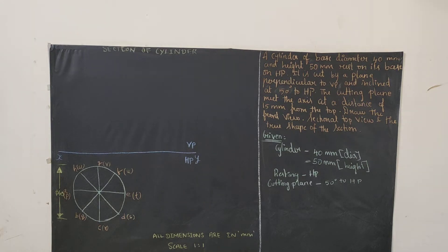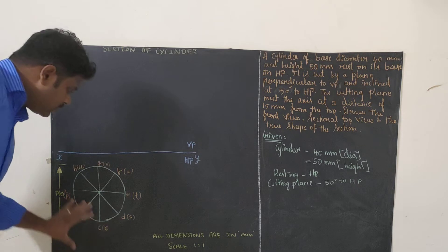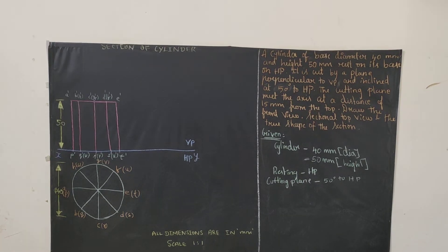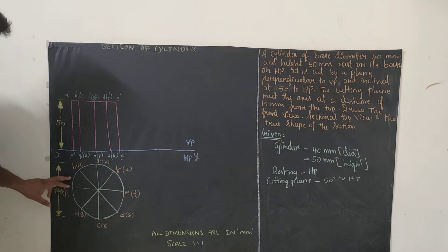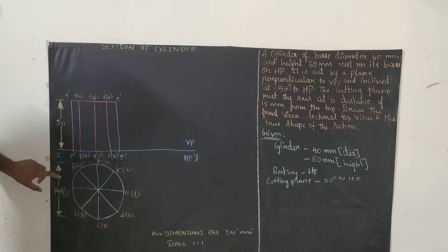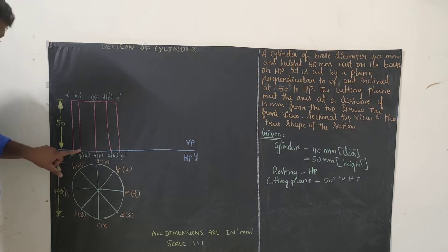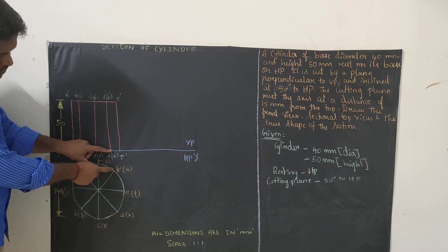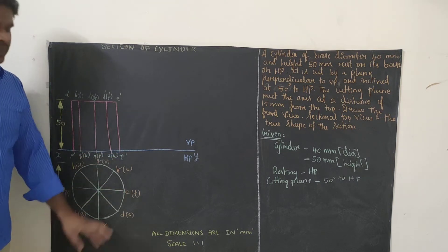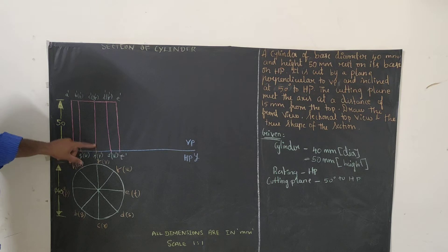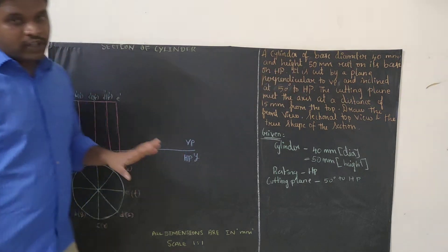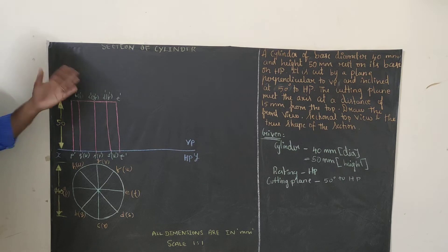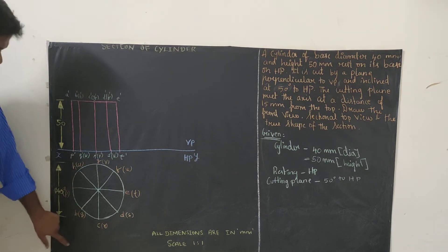Whatever we draw in the top view, by extending those points we can get the front view of the cylinder. Extend the top view points vertically upward to get corresponding points on the reference line. From the axis, draw a line for 50 mm height and complete the rectangular front view box.